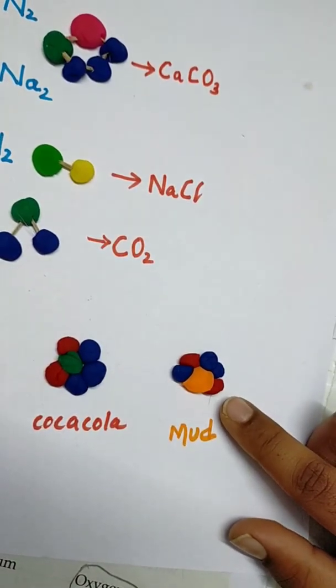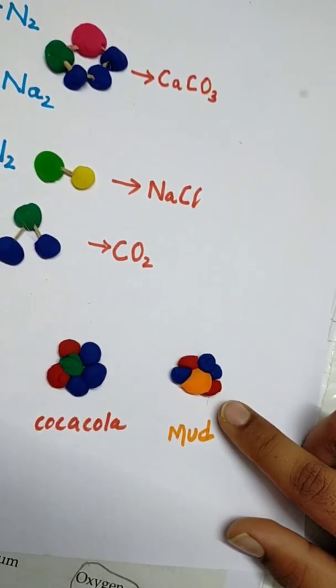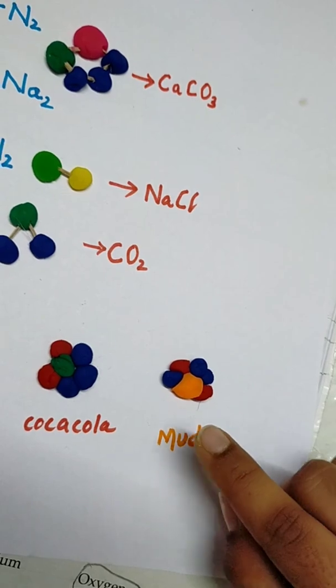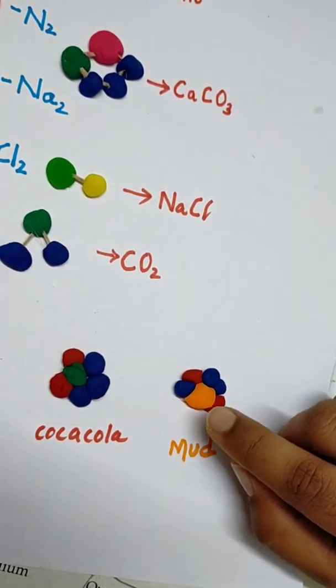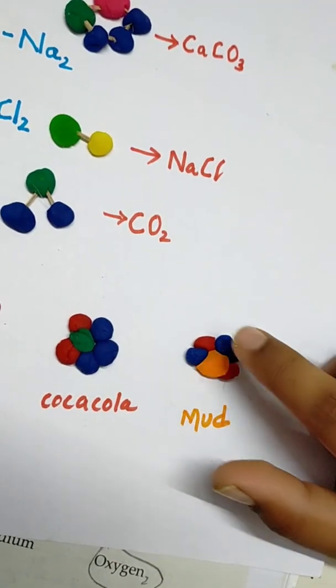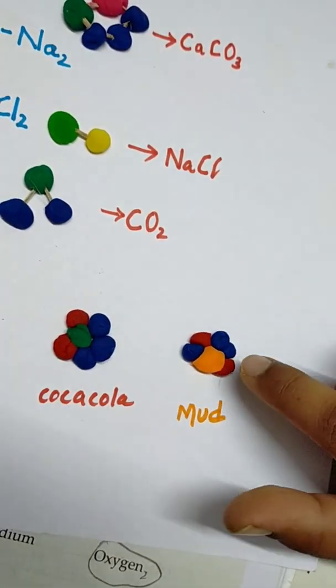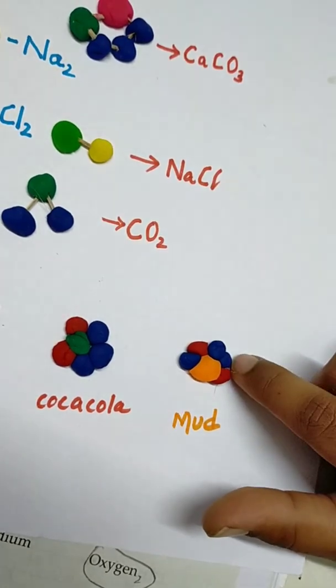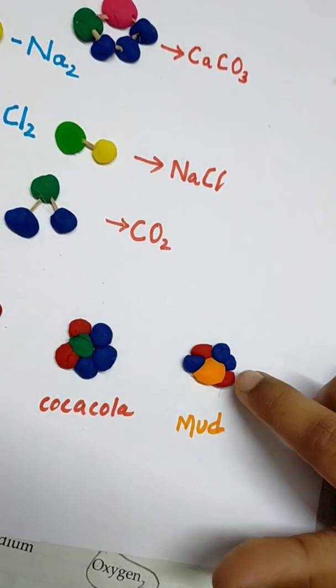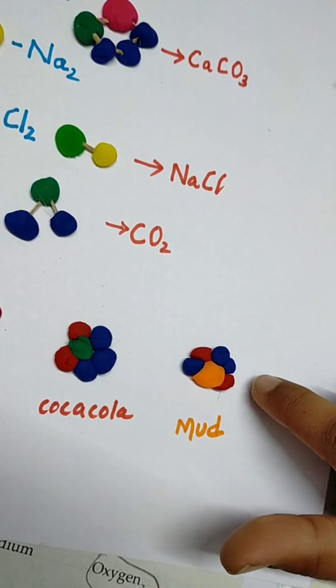This mud is formed when sand and water combine. So sand composition is SiO2, so this is one silicon and these two blue are oxygen, plus H2O water. So here one oxygen and two hydrogen. It combines and makes mud.